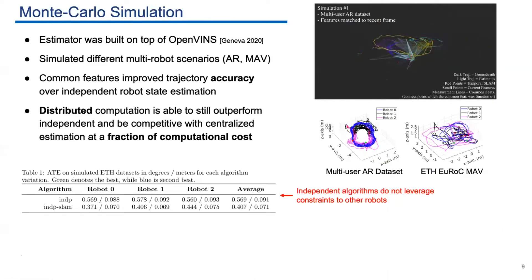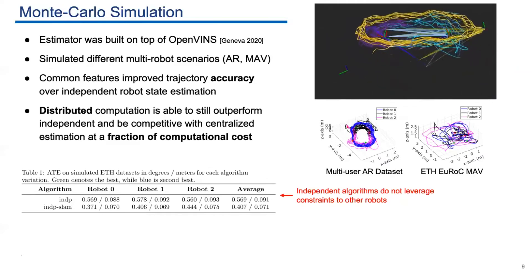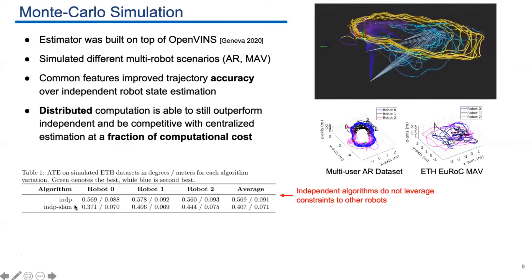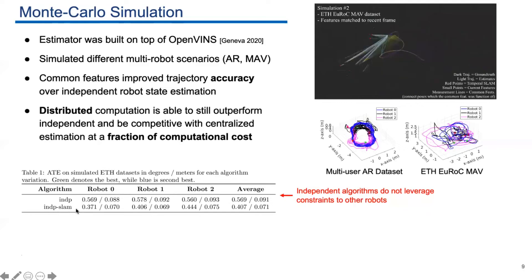We first evaluate our algorithms using Monte Carlo simulations. Our estimator was built on top of OpenVINS. It's an open source project. If you are interested, I highly recommend you to check this project. We simulated two different kinds of multi-robot scenarios. Here we show the results for the simulated ETH-MV dataset. In this table, first we give the results for the independent case. INDP represents the independent algorithms that use only the VIO feature, and the independent SLAM includes the SLAM feature.